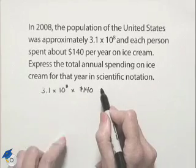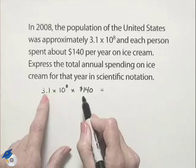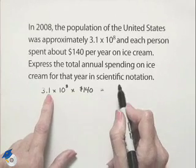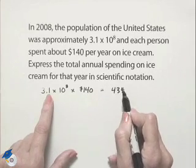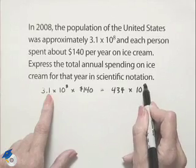That's going to give us a product of, let's multiply 3.1 times 140, that's 434, and then that's multiplied times 10 to the eighth.